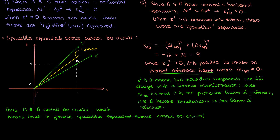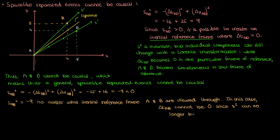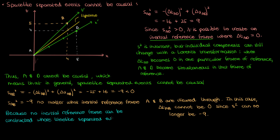This isn't an issue for time-like separated events. Take event B inside the light line at (t=4, x=5) — the spacetime interval between A and B is negative 9. No matter what Lorentz transformation I perform, s squared between A and B will always remain negative 9. It is therefore not possible to construct an inertial reference frame where the delta t between A and B becomes zero, because that would make s squared positive rather than negative 9. Since s squared is invariant and must remain negative 9, two time-like separated events can never be simultaneous, meaning it is possible for those events to be causal.